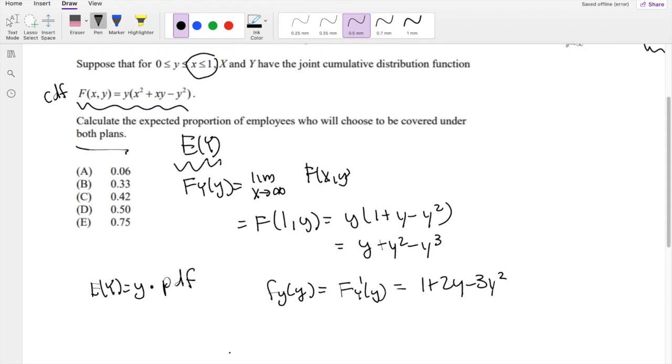All right, so now, in order to find the expectation of Y, we just have to multiply Y in there. So it's going to be Y + 2Y² - 3Y³, integrating from our limit for Y is 0 to 1.